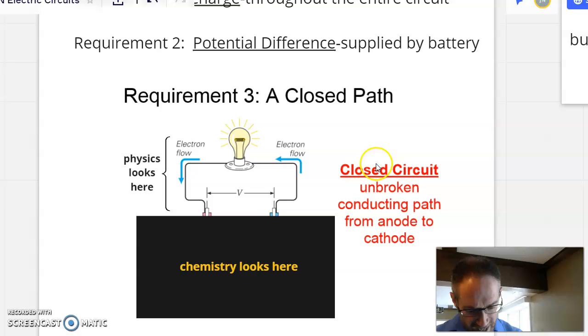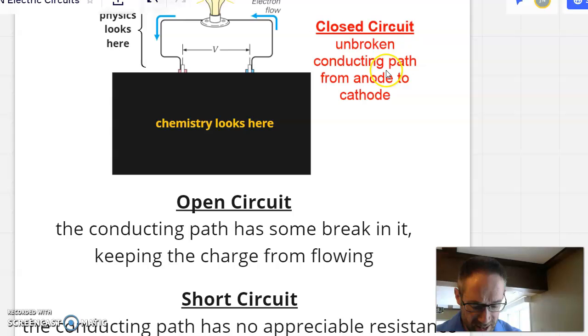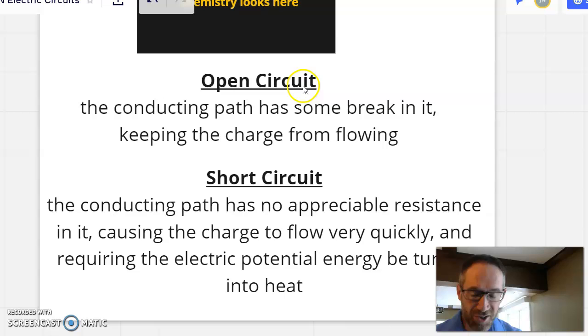And just to wrap it up then, some vocabulary that we had there today. A closed circuit is an unbroken conducting path from the anode to cathode, or the terminals of the battery, if you like. The open circuit and the short circuit are the two kinds of failures in this experiment. The open circuit was the one where the conducting path has some break in it, keeping the charge from flowing.